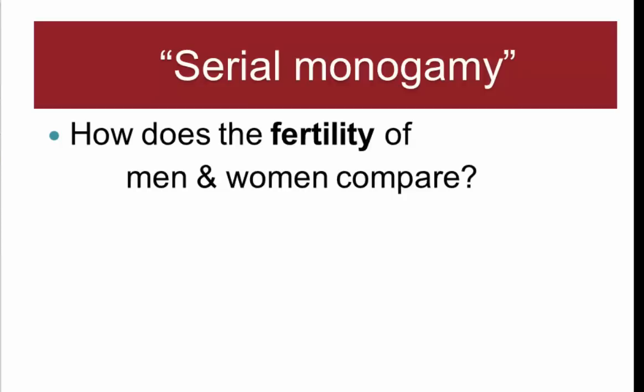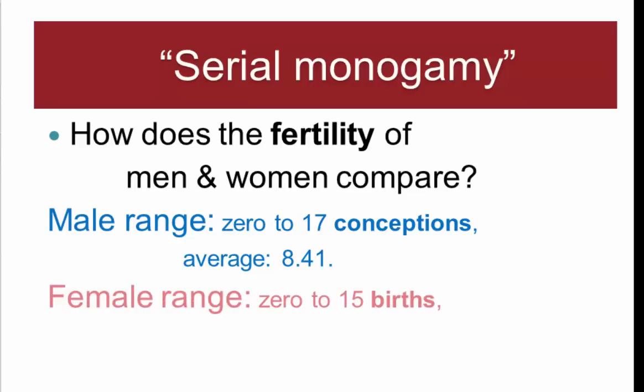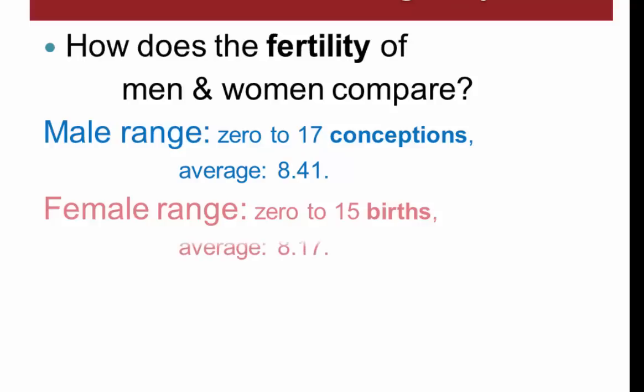Among the Impimboy there are sex differences in reproductive success, but they don't play out as expected from Bateman's reasoning. Borgerhoff Mulder describes the Impimboy marriage system as serial monogamy — one spouse at a time but multiple spouses over a lifetime. She examined how fertility differed between men and women. Fertility refers to how many live births result. The male range was 0 to 17 with an average of 8.41 per man; the female range was 0 to 15 with an average of 8.17 live births per woman.